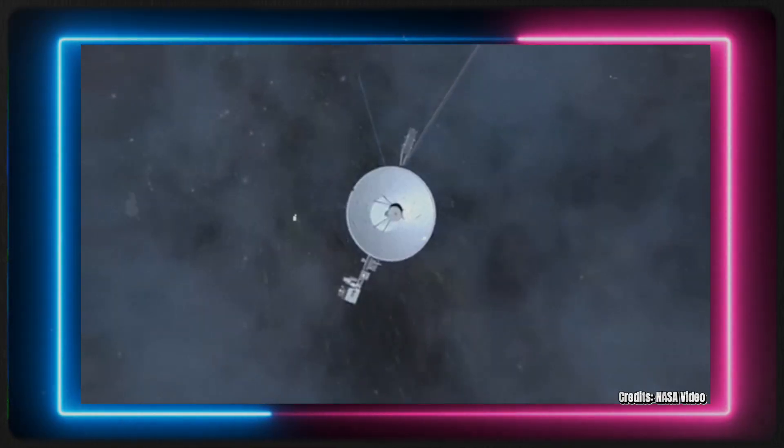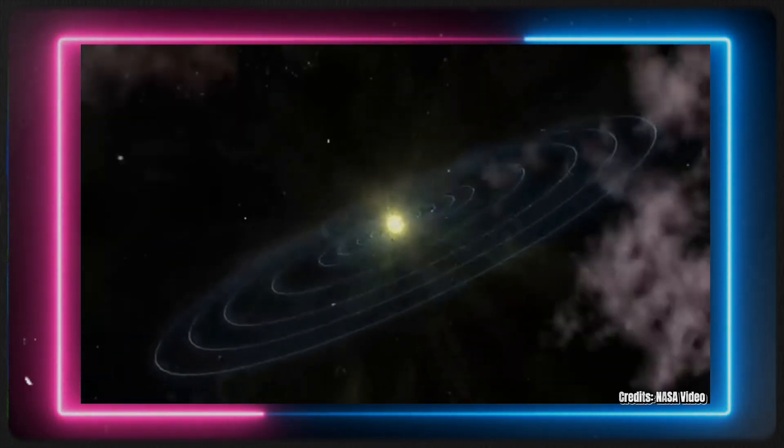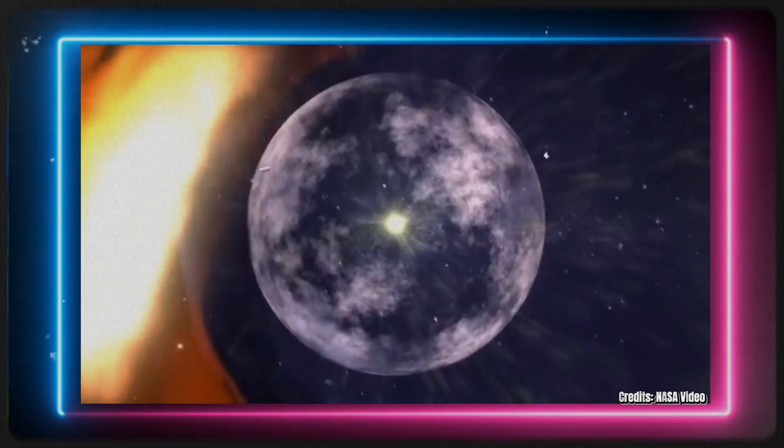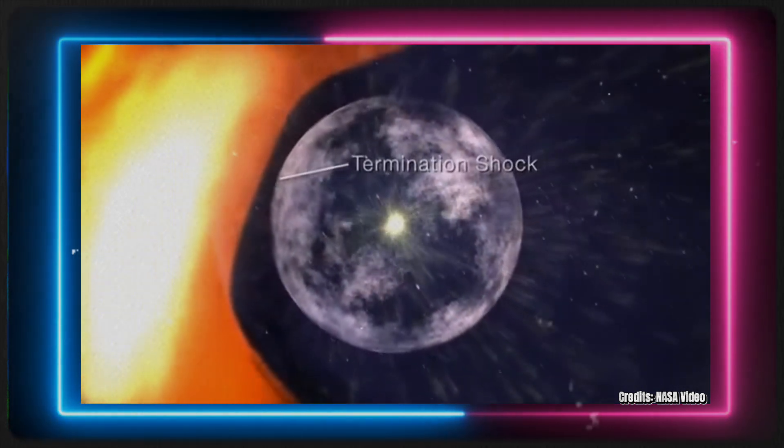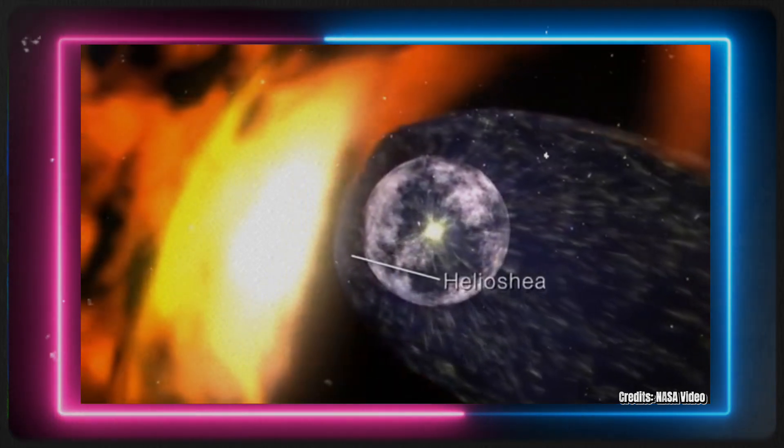Although Voyager 1 had reached the outer boundary of our solar system, it still had to traverse the heliosphere to enter interstellar space. For context, the heliosphere acts as a protective bubble around our solar system, shielding us from the harsh radiation and energetic particles of interstellar space.